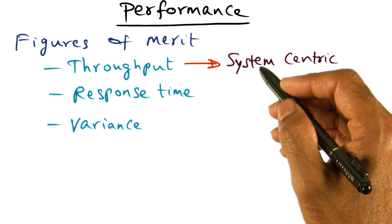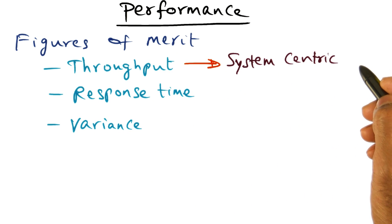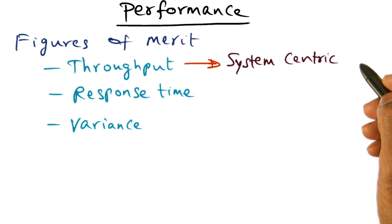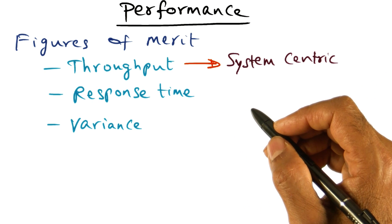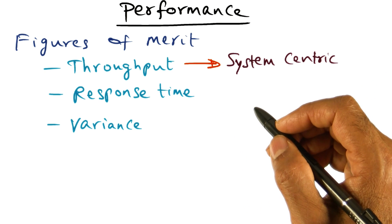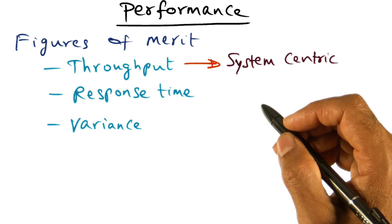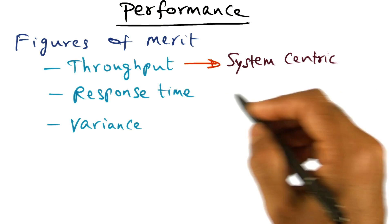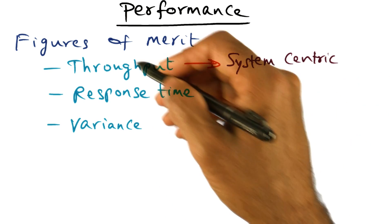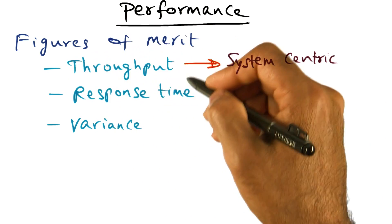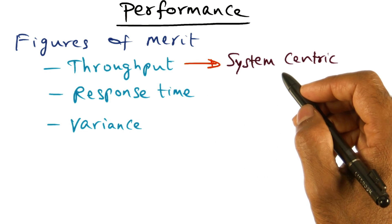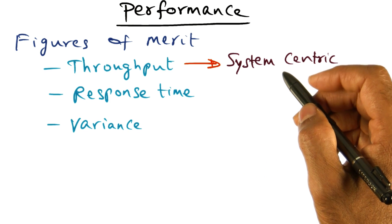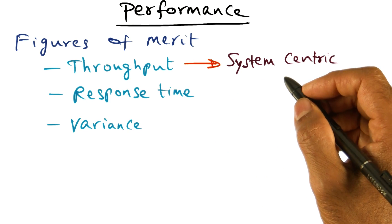As the name suggests, throughput is a system-centric metric. It doesn't say anything about the performance of individual threads — how soon they are performing the work and getting out of the system — but it is asking what is the throughput of the system with respect to the threads that need to run on it.